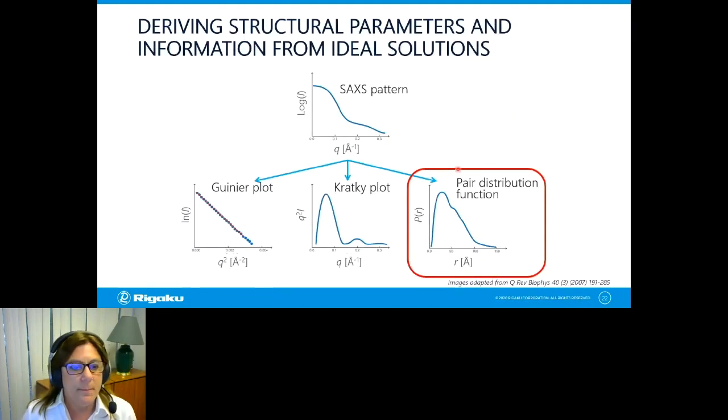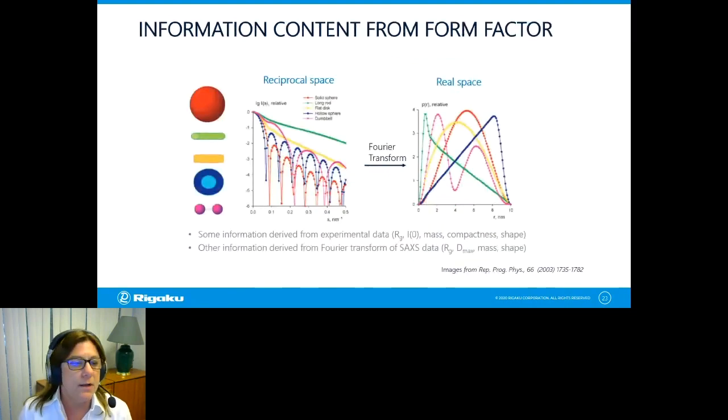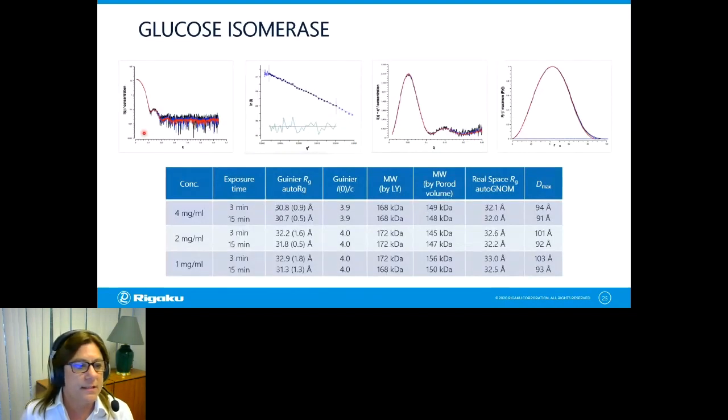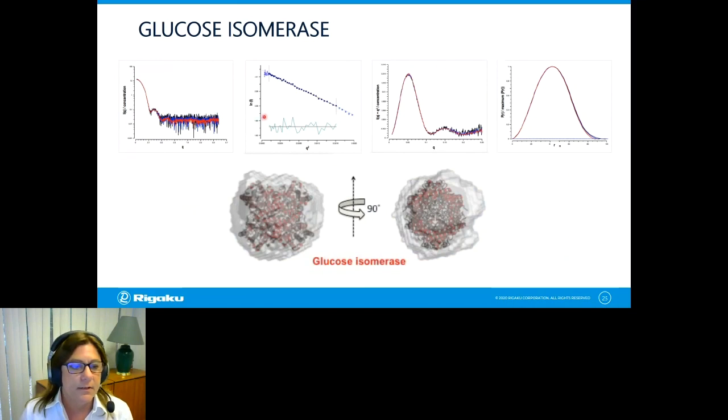Additionally, what you can do is a pair distance distribution function. And basically what that does is it gets you from reciprocal space to real space. So you can start to derive some models. All right, so we're going to quickly look at that for glucose isomerase. So here's a mixture of several scattering profiles. They perfectly overlay with a Guinier plot, a Kratky plot that shows it's folded. And we've done an inverse direct, indirect Fourier transform, and we can then calculate a model. So I've gone quickly through this, but it gives you an idea what you can do if you're working in that type of sample space.